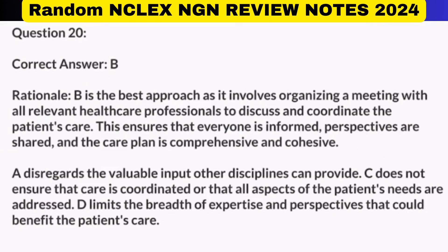Correct answer: B. Rationale: B is the best approach as it involves organizing a meeting with all relevant healthcare professionals to discuss and coordinate the patient's care. This ensures that everyone is informed, perspectives are shared, and the care plan is comprehensive and cohesive. A disregards the valuable input other disciplines can provide. C does not ensure that care is coordinated or that all aspects of the patient's needs are addressed. D limits the breadth of expertise and perspectives that could benefit the patient's care.